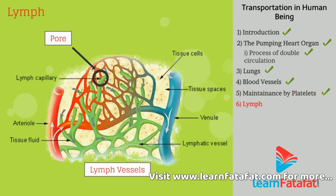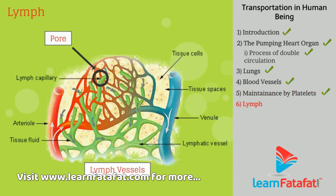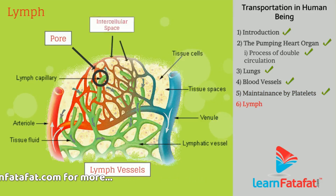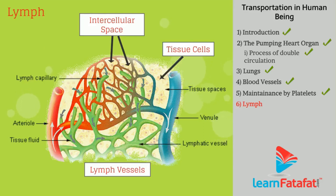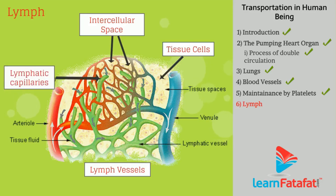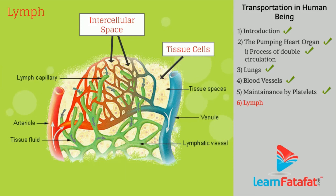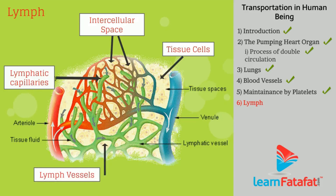Through pores present on the walls of capillaries, some amount of plasma, protein, and blood cells escape into intercellular spaces present in tissue. This fluid is called lymph. It is colorless and contains less protein. Lymph is collected by lymphatic capillaries from the intercellular spaces, which join to form lymph vessels connected to larger veins, transferring lymph into them.